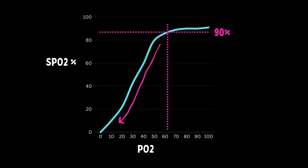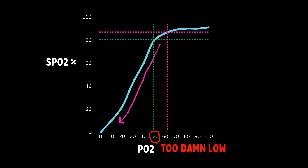But look at 90% on the curve. Once you get below 90%, the PO2 starts to precipitously plummet. So while a drop from 99% to 90% isn't a huge deal, a drop from 89% to 80%, or a drop from 95% to 82%, is a big deal.